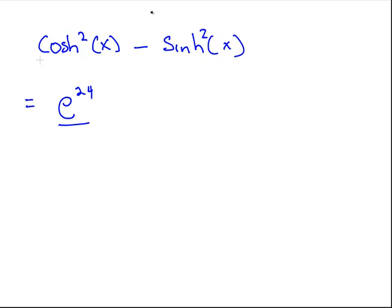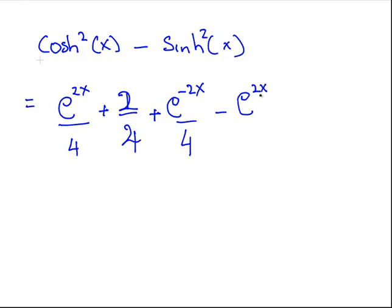So cosh squared x minus sinh squared x is equal to e to the 2x over 4 plus 2 over 4 plus e to the minus 2x over 4, minus e to the 2x over 4 minus 2 over 4 minus e to the minus 2x over 4.